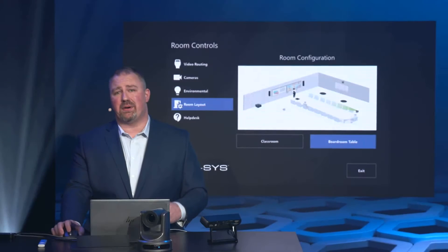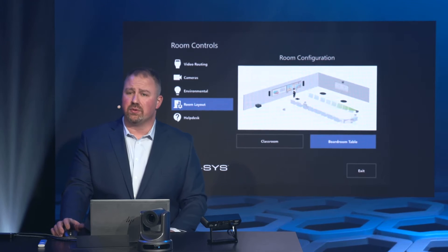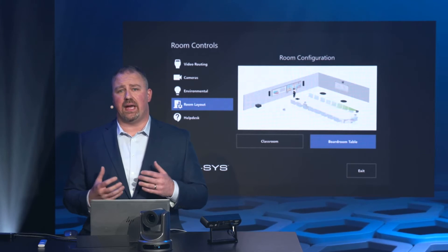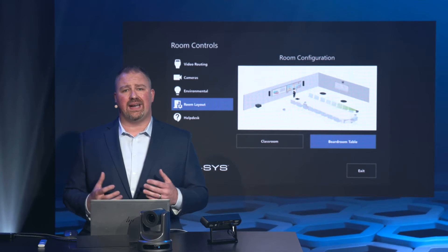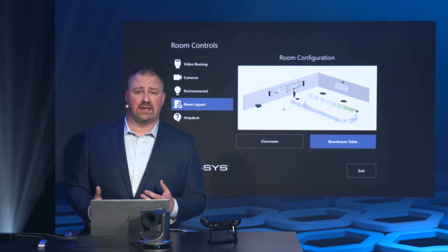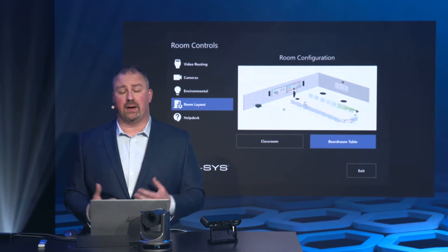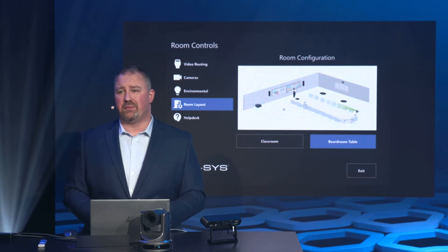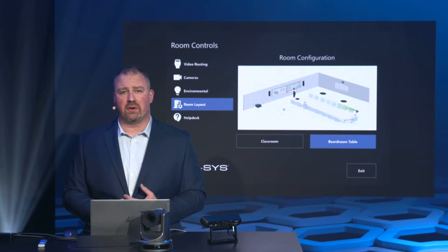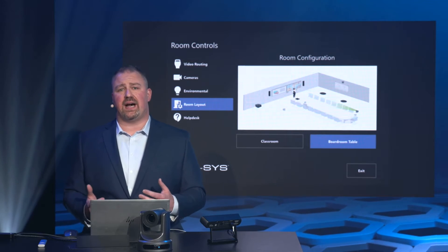The next tab on our first UCI is the room layout. Think of an MTR in a high-impact space with movable furniture. Today, it's a board meeting with users calling in from around the world.